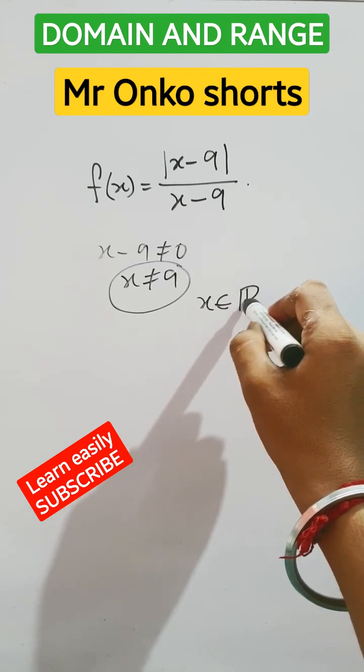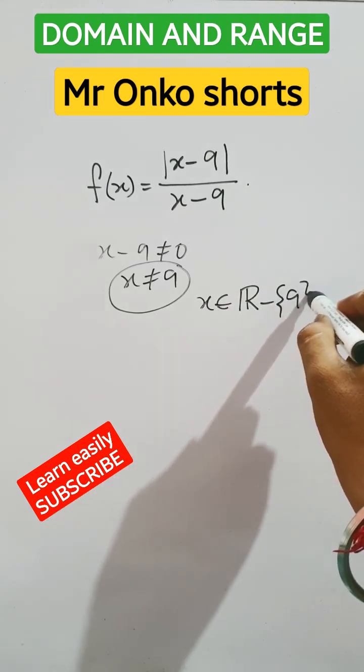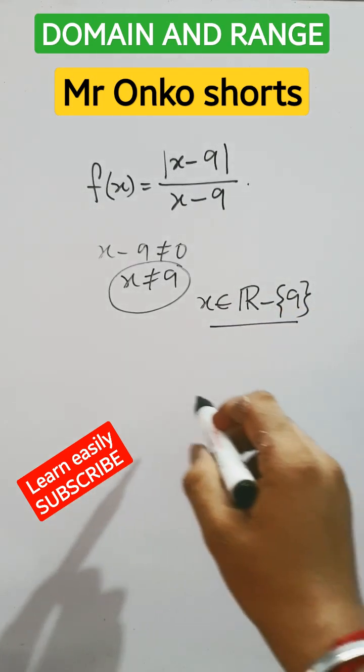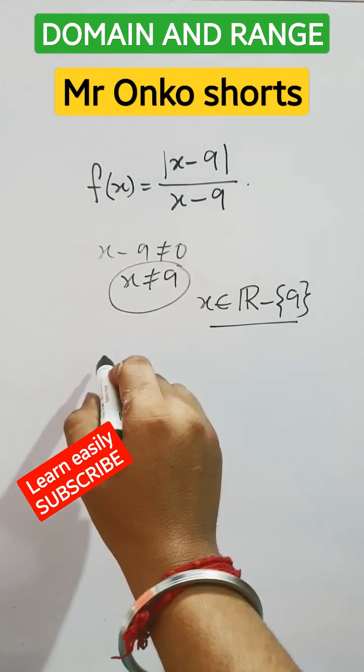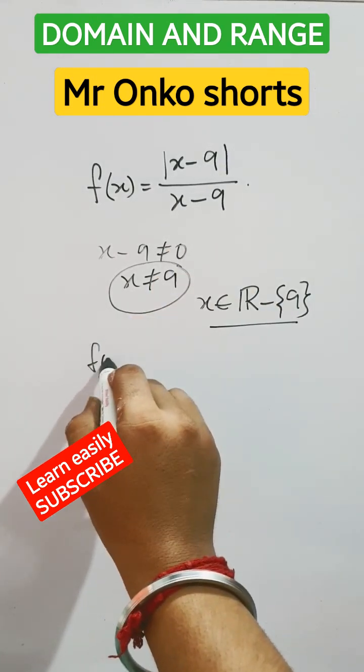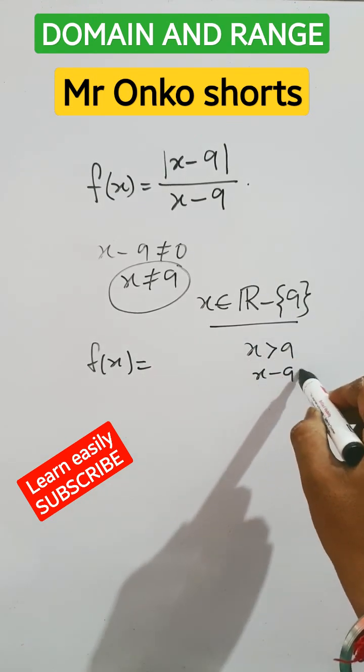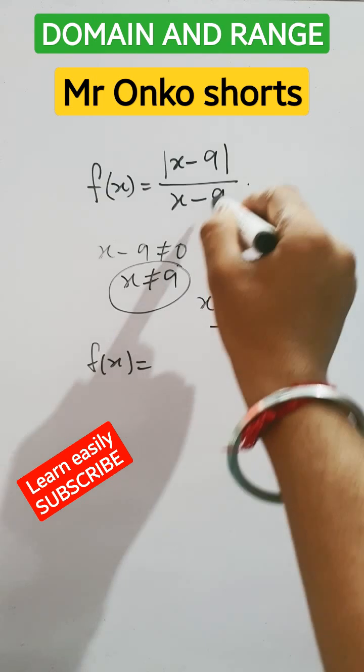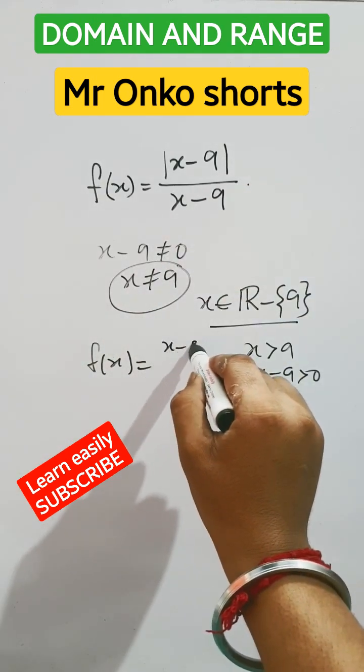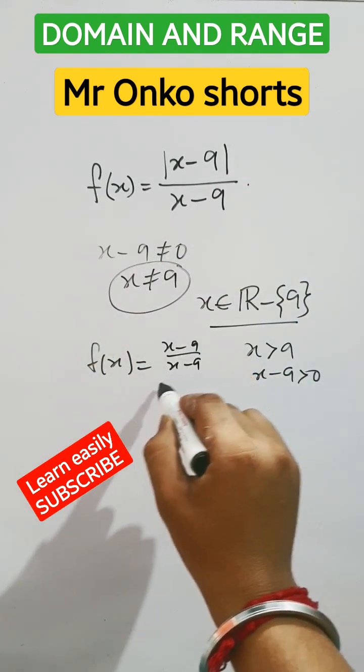Now for the range, we have to study the function f(x). If x is greater than 9, then x - 9 is greater than 0, so the modulus |x - 9| will be positive x - 9, which divided by x - 9 equals 1.